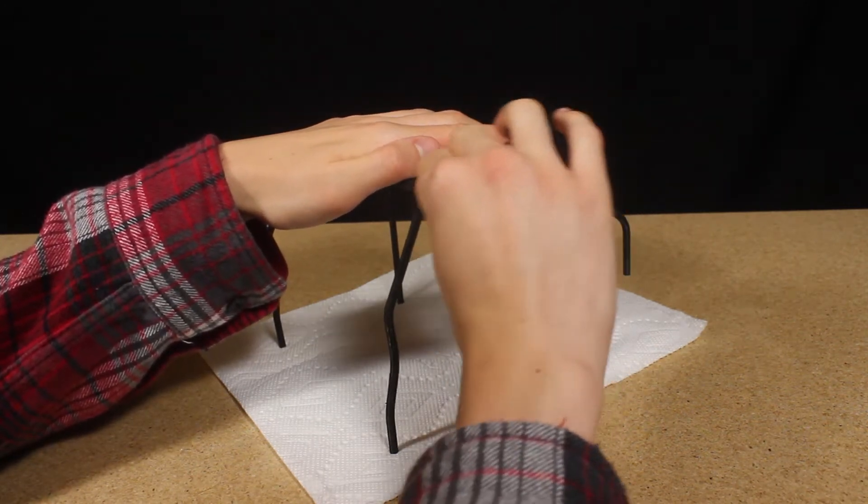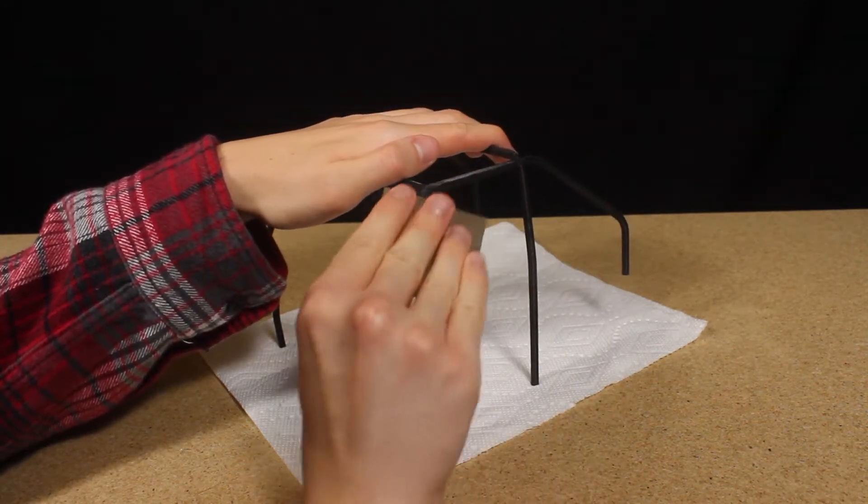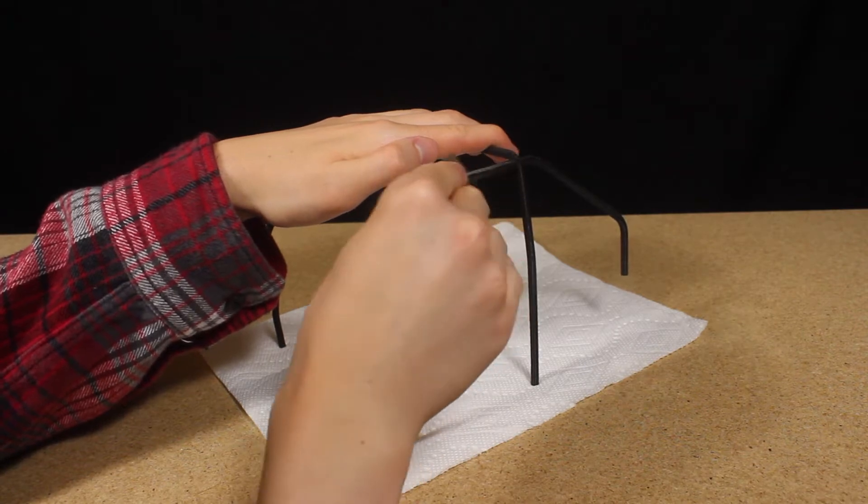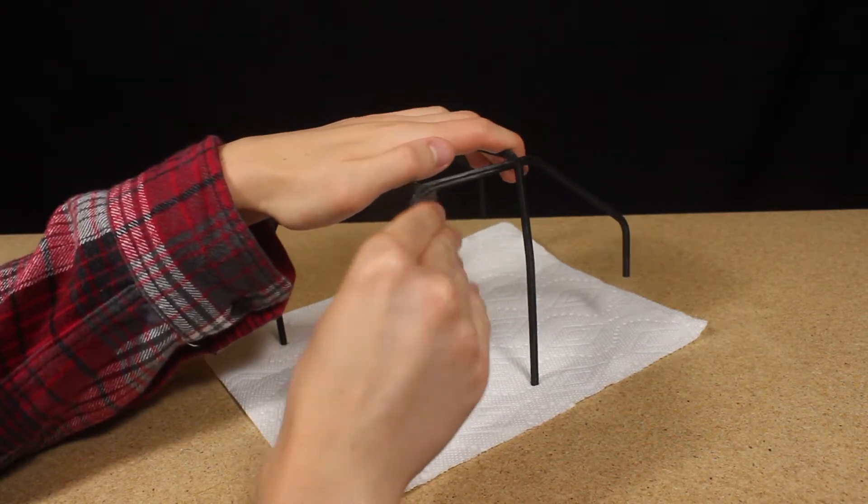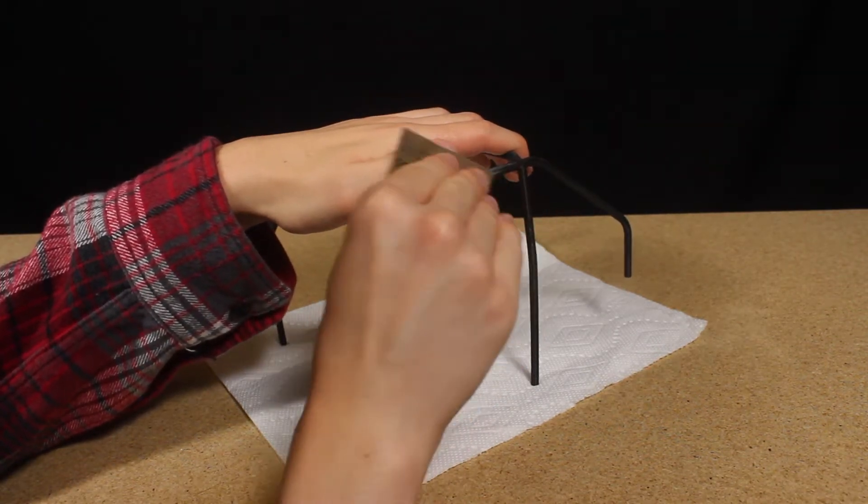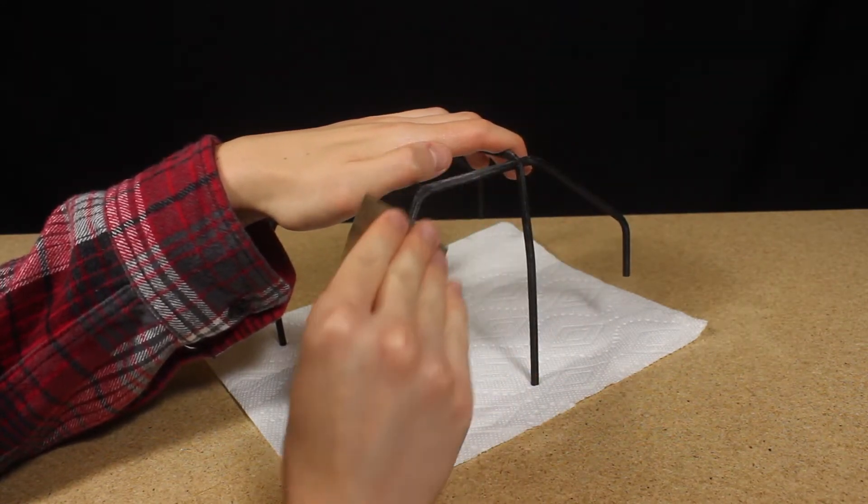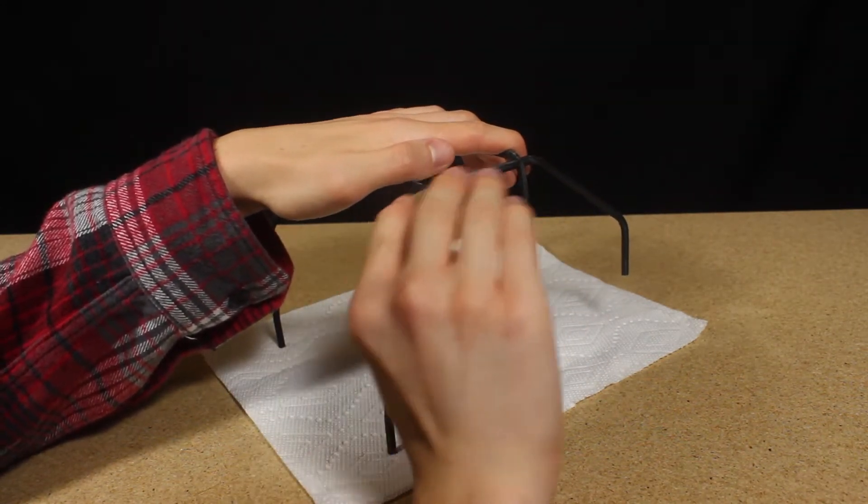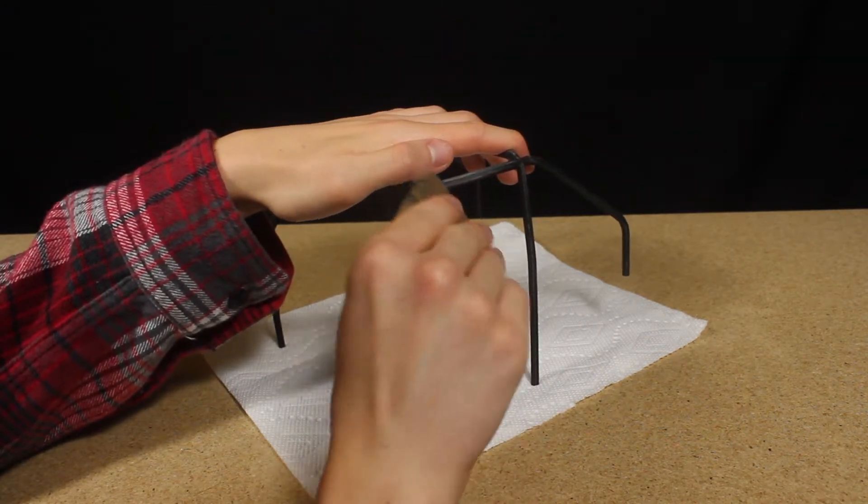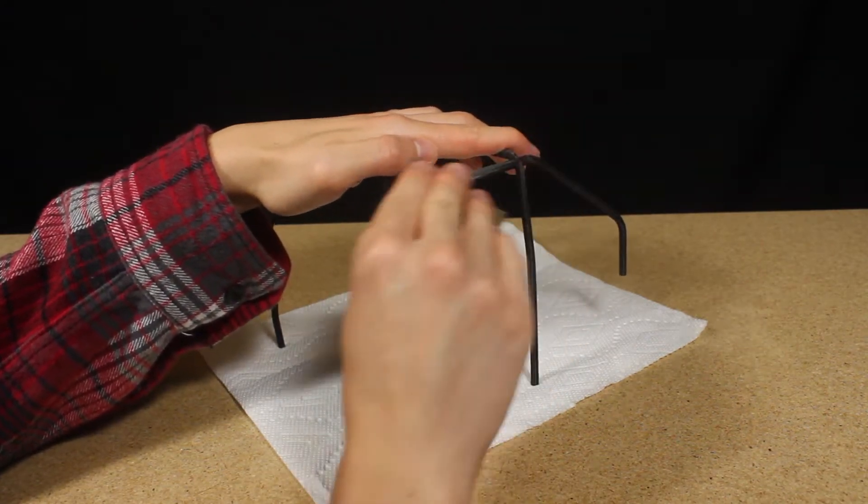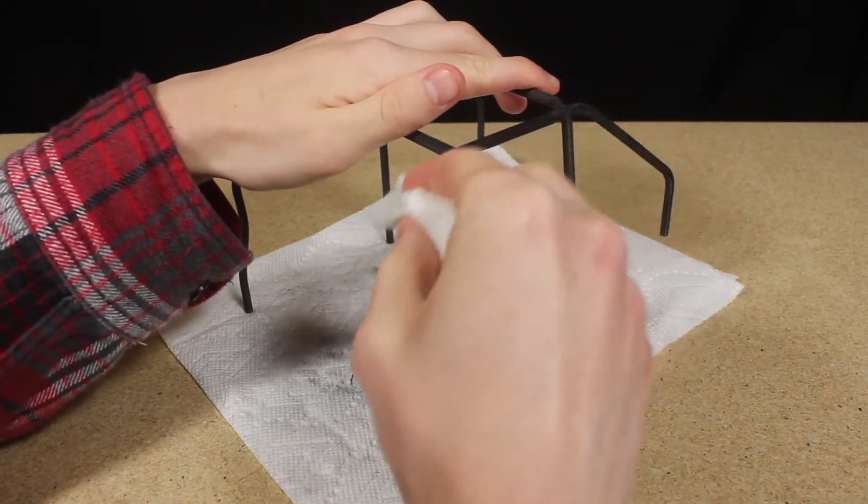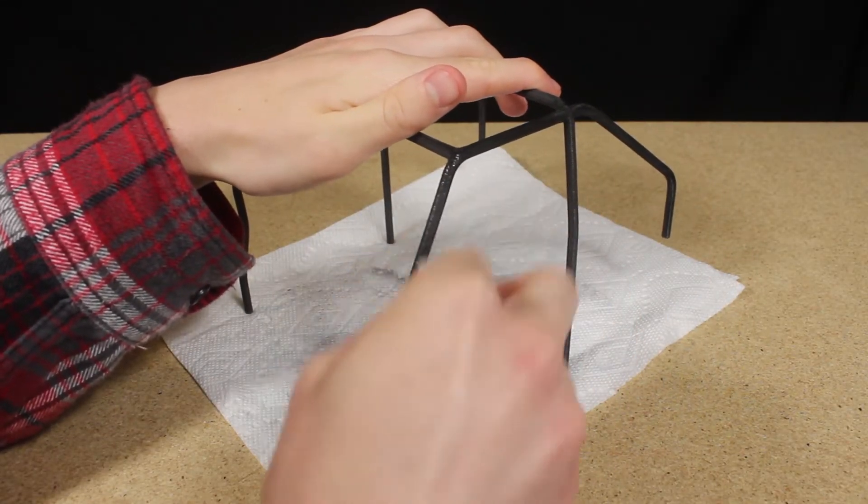The first thing I want to do is sand the surface to remove any large imperfections on the part and provide a slightly rough surface for the Millie Putt to adhere to. Extensive sanding is not necessary. You only need to focus on large imperfections since the putty and XTC 3D coating will take care of any smaller bumps or holes on the parts surface. After sanding, I use a wet paper towel to remove all the dust.